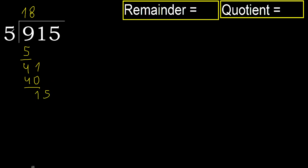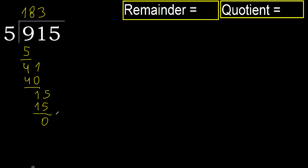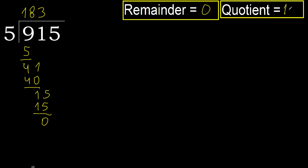Now we have 15. 5 multiplied by 3 is 15, which is not greater — subtract exactly. There is no number left, so we finish. 915 divided by 5 is 183.